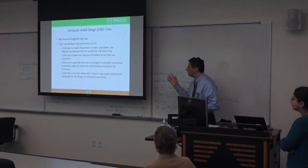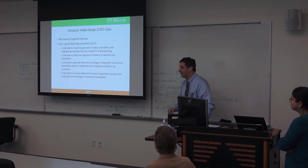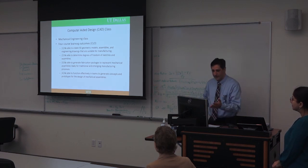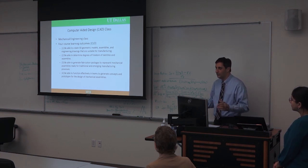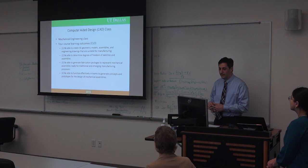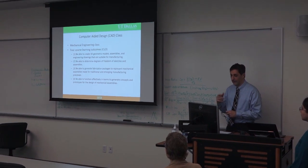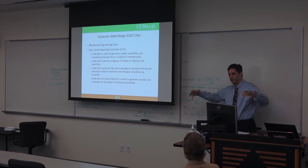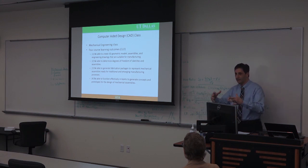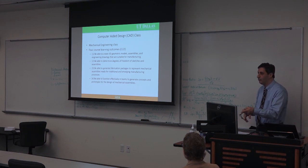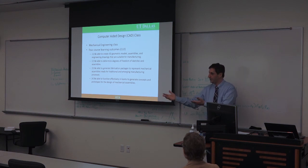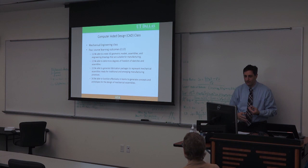This is the course. When you take computer-aided design at the mechanical engineering department, four course learning outcomes are involved. The first one: be able to create 3D geometric models, assemblies, and engineering drawings. They create the 3D model, assemble multiple 3D models together to create a full assembly, and then create the actual engineering drawings — the paper drawings they can send to a machine shop or fabricator who will build the product and send it back.